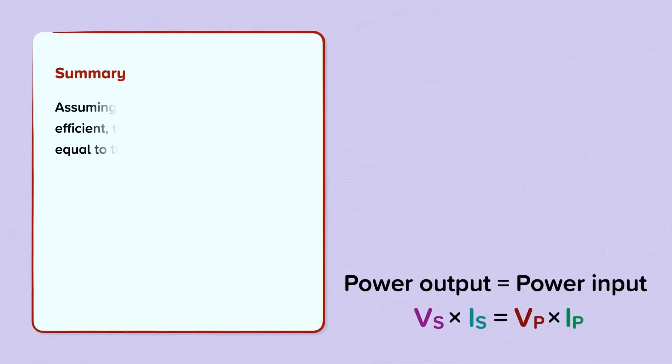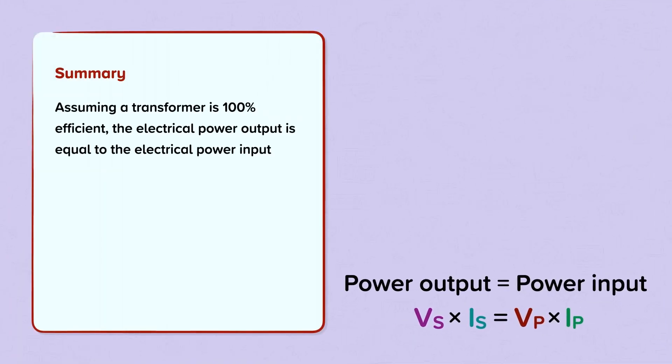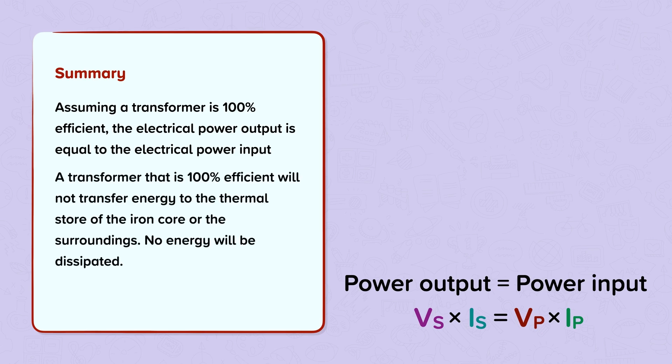Summary. Assuming a transformer is 100% efficient, the electrical power output is equal to the electrical power input. A transformer that is 100% efficient will not transfer energy to the thermal store of the iron core or the surroundings. No energy will be dissipated. The unit of power is the watt.